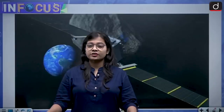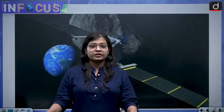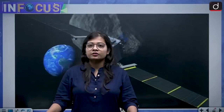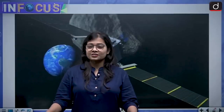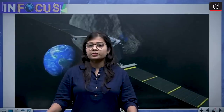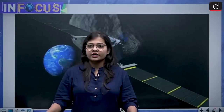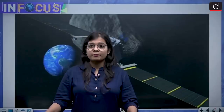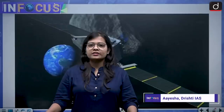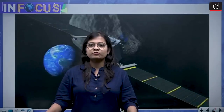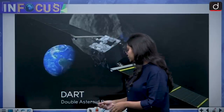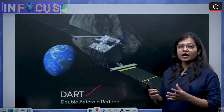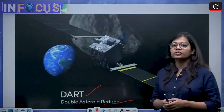Many times in science fiction movies or books, we have seen the story of an asteroid reaching towards Earth and about to destroy human life, and suddenly at the last moment, humans come up with a trick and save the Earth. This is what has happened in reality this time. Hello and welcome to the In Focus series of Drishti IAS. I am Aisha Singh and in today's video, we will be discussing the DART mission of NASA — DART stands for Double Asteroid Redirection Test.